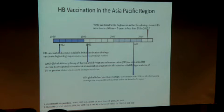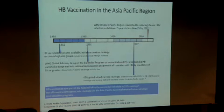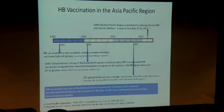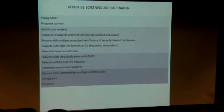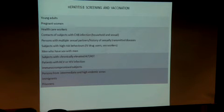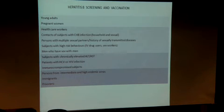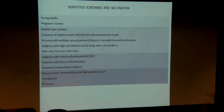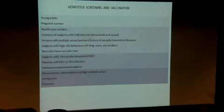Hepatitis B vaccination is now part of the national infant immunization schedule in about 162 countries. Focusing back on Singapore — screening and vaccination can be divided into different groups: young adults who may have missed the vaccination schedule; pregnant women, to prevent transmission to their children; high-risk individuals; patients with chronic liver disease, HCV, or HIV infection; and patients from high-endemic countries.